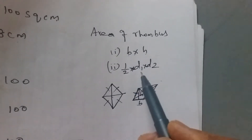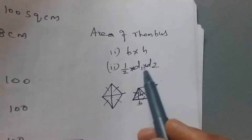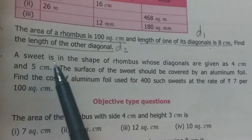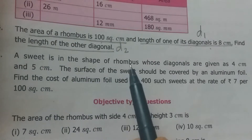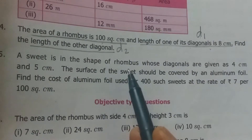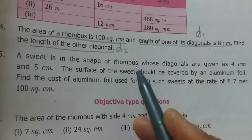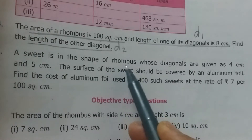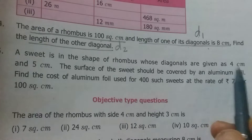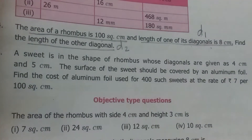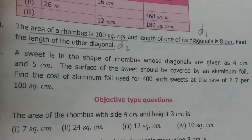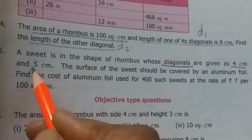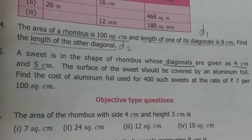These are the two formulae to find the area of a rhombus. Now read question 5 first: a sweet is in the shape of a rhombus — you have seen milk sweets usually in the diamond shape. The rhombus has diagonals of 4 centimeter and 5 centimeter. It is very important to be clear about what is given — are you given the base or the diagonals? Here the diagonals are 4 cm and 5 cm.